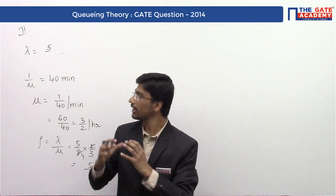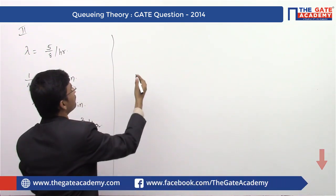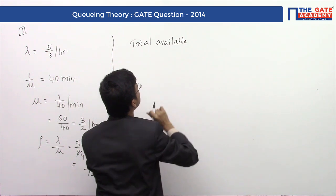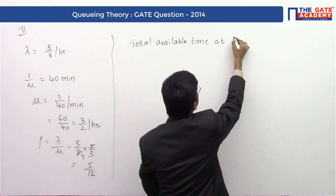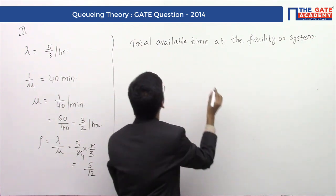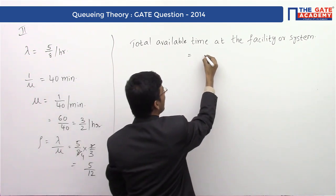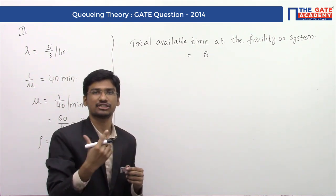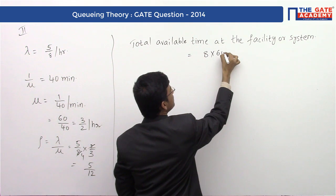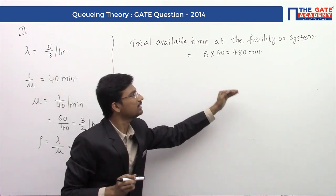We will discuss the second method or alternate approach to solve this question. We can find the total available time at the facility. The total available time at the facility is 8 hours per shift. We are converting this 8 hours into minutes by multiplying by 60. So the total available time is 480 minutes.